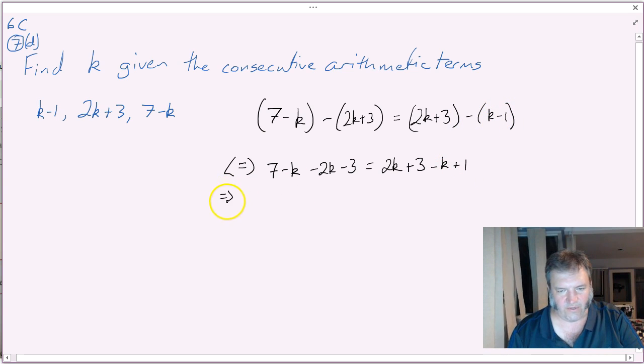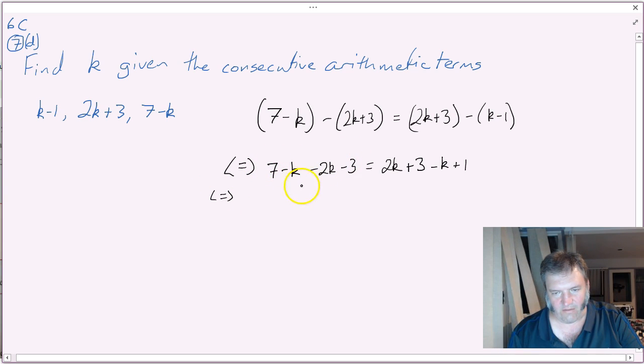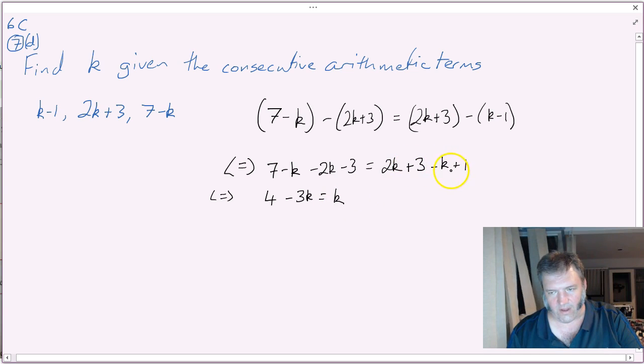I think for this one, we'll just simplify each side first, so numbers first, 7 minus 3 is 4. Negative k, take away 2 more k, is negative 3k. What's that equal to on the other side? 2k minus k would be 1k, and 3 plus another 1 is 4.